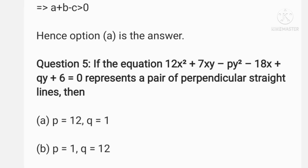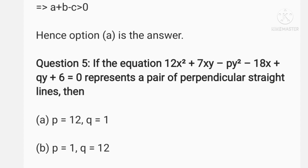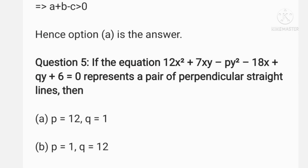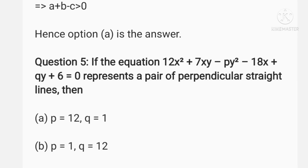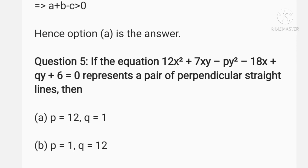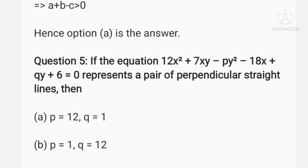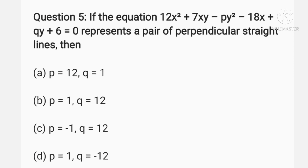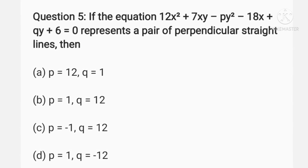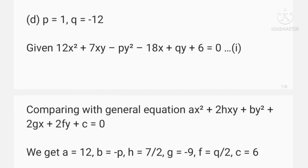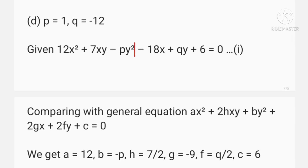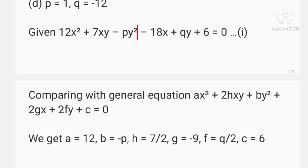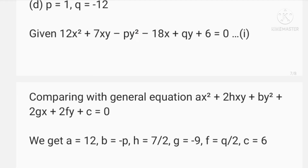The next question: if the equation 12x² + 7xy - py² - 18x + qy + 6 = 0 represents a pair of perpendicular straight lines, find p and q. Comparing with the general equation, we get a = 12, b = -p, h = 7/2, g = -9, f = q/2, and c = 6.